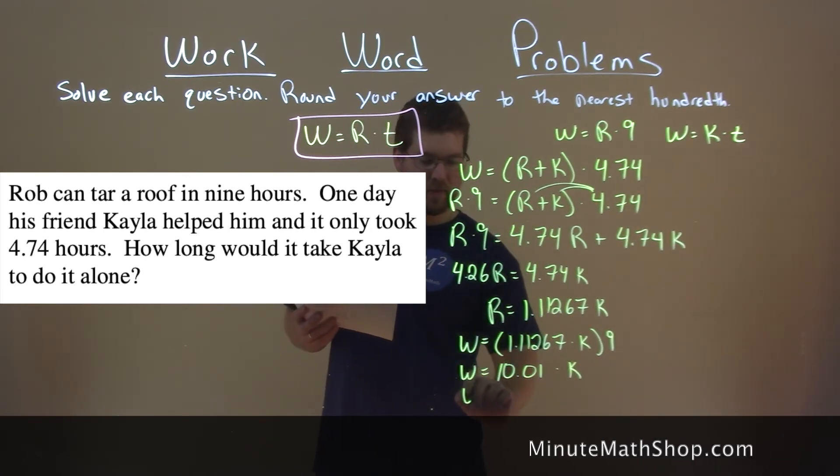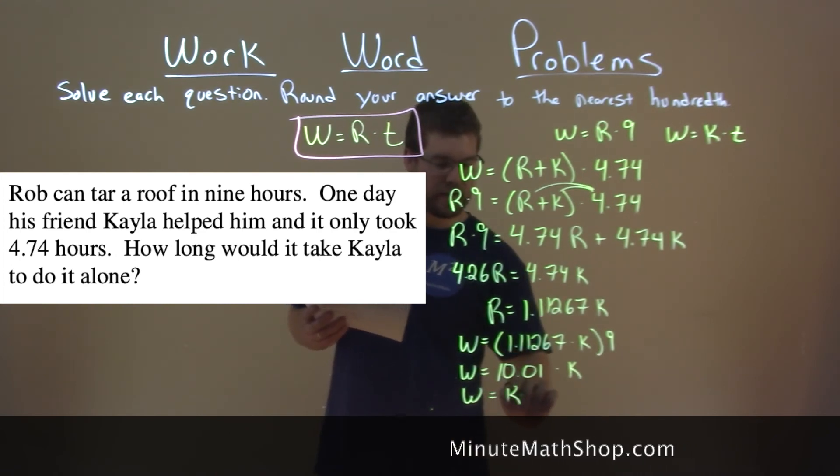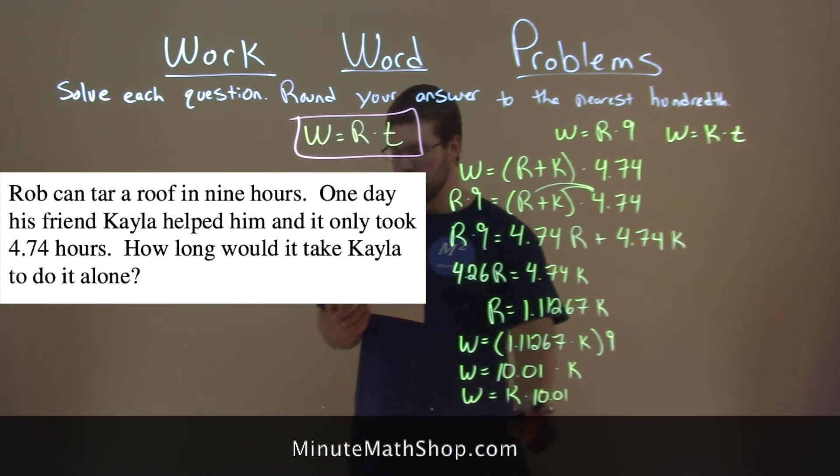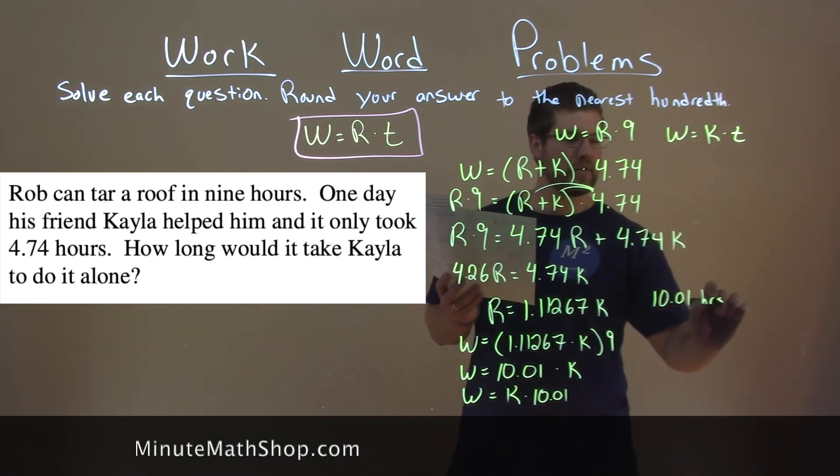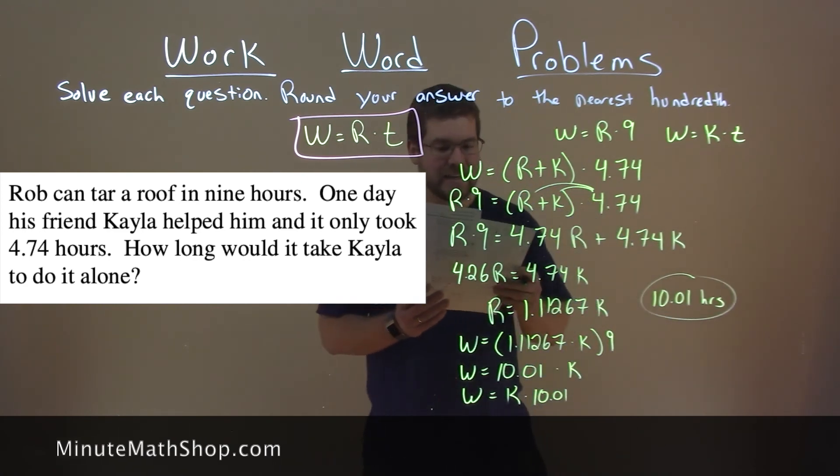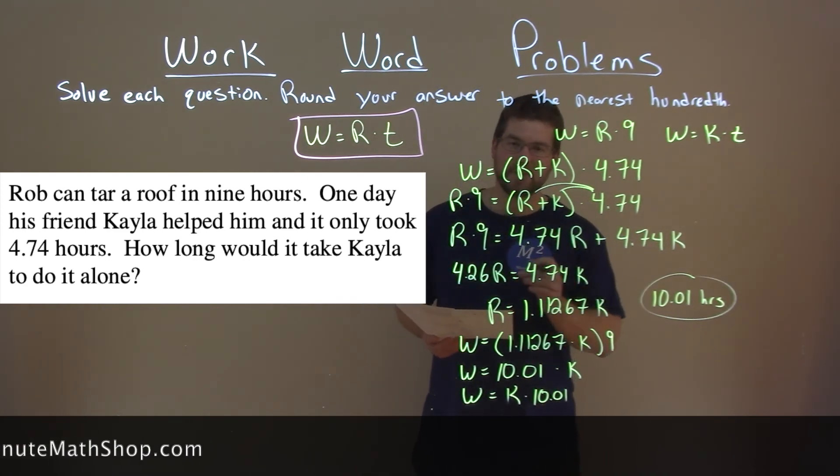Rewrite this around: w equals k times 10.01, and that's our time we're looking for. So we have 10.01 hours, and that is how long it would take Kayla to do it alone.